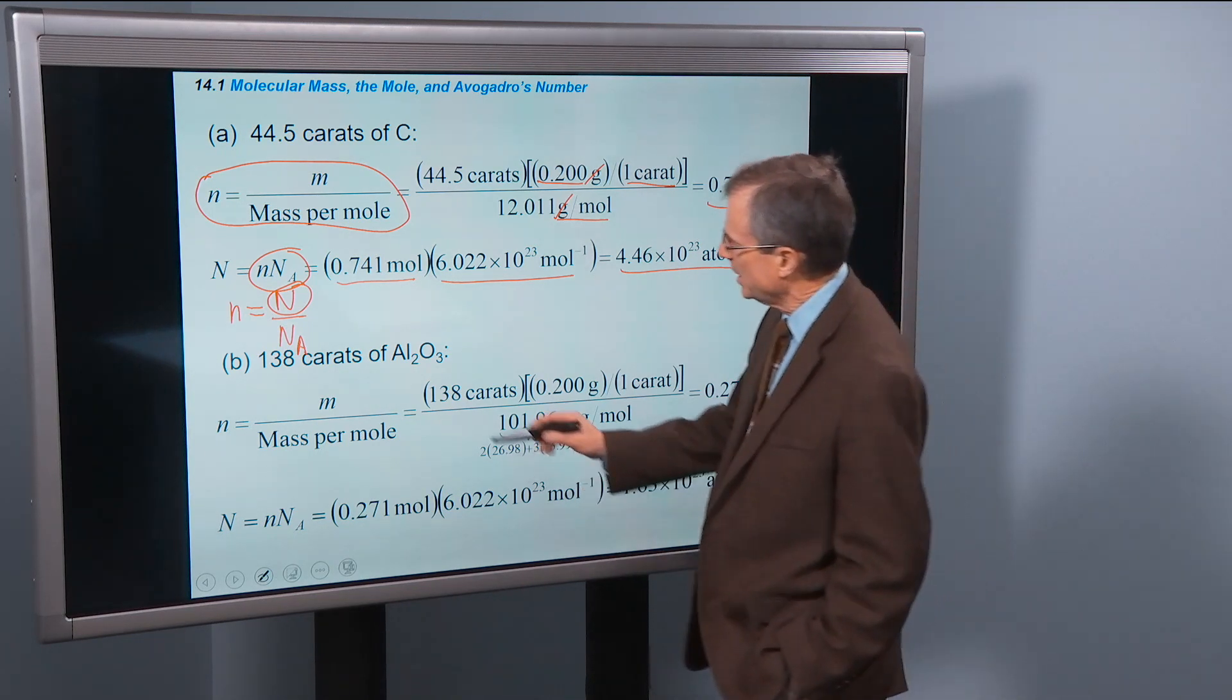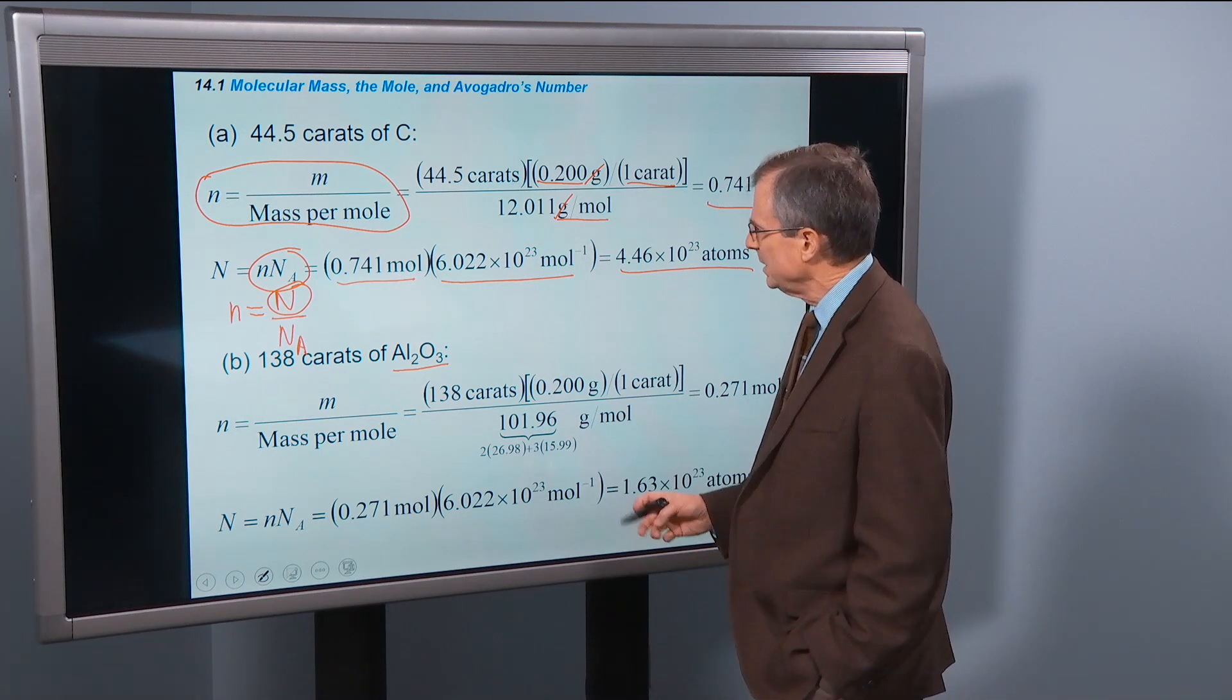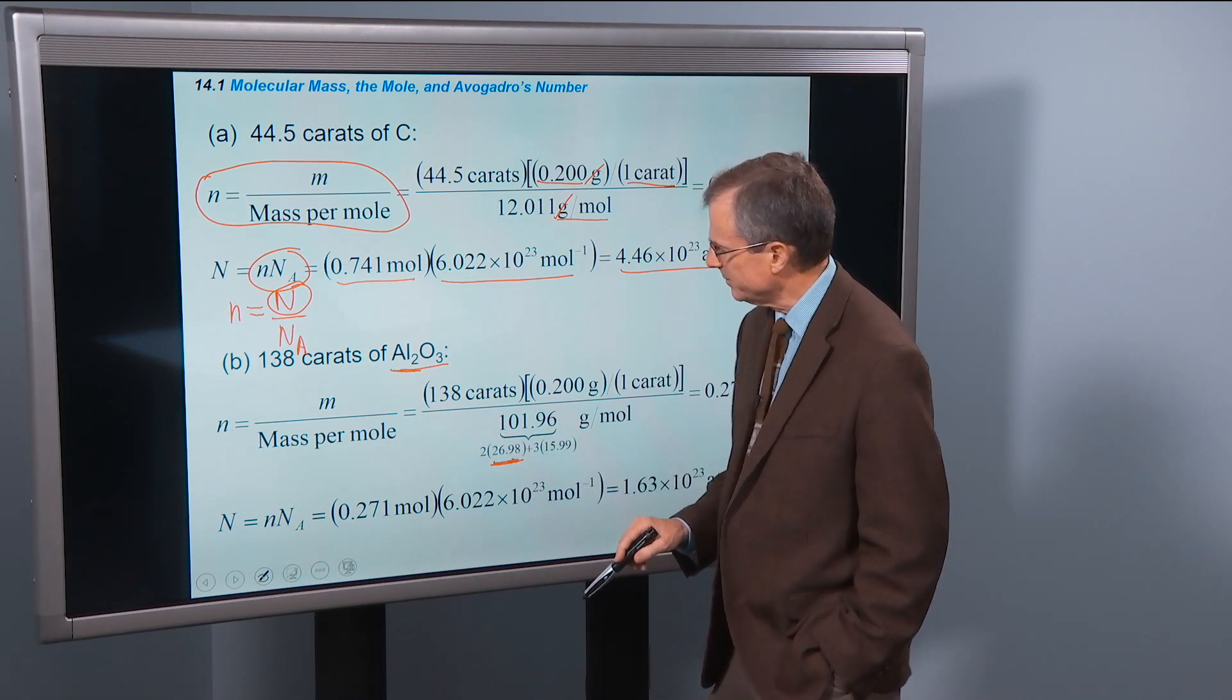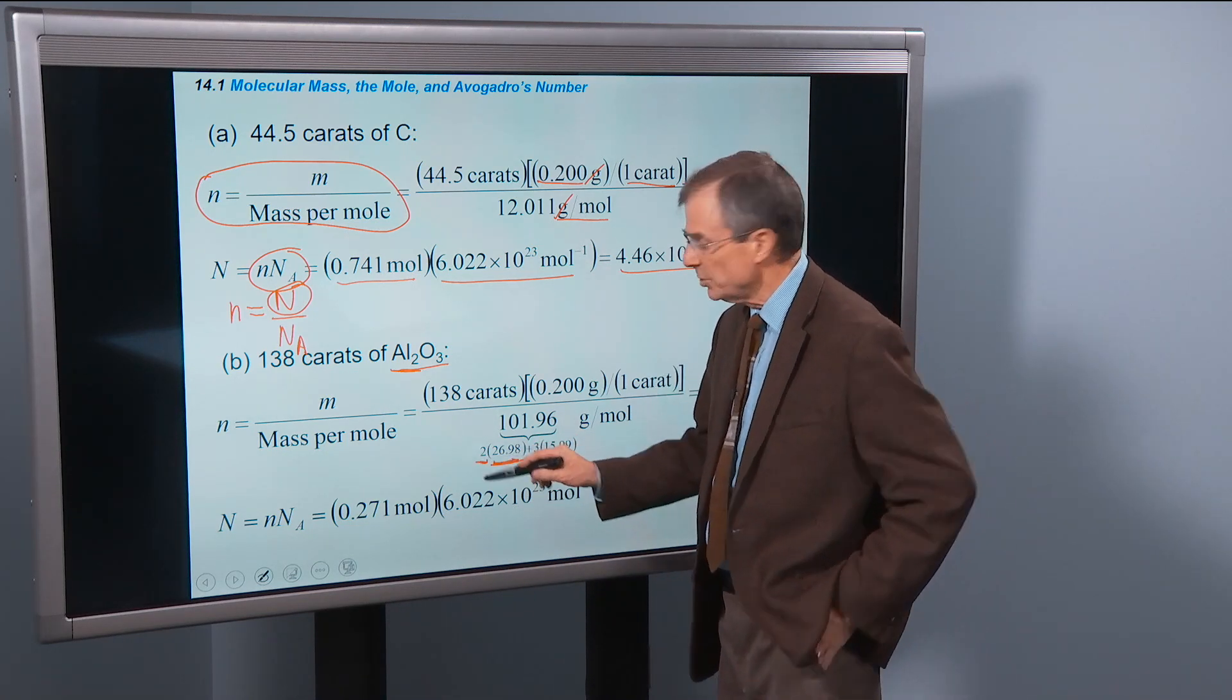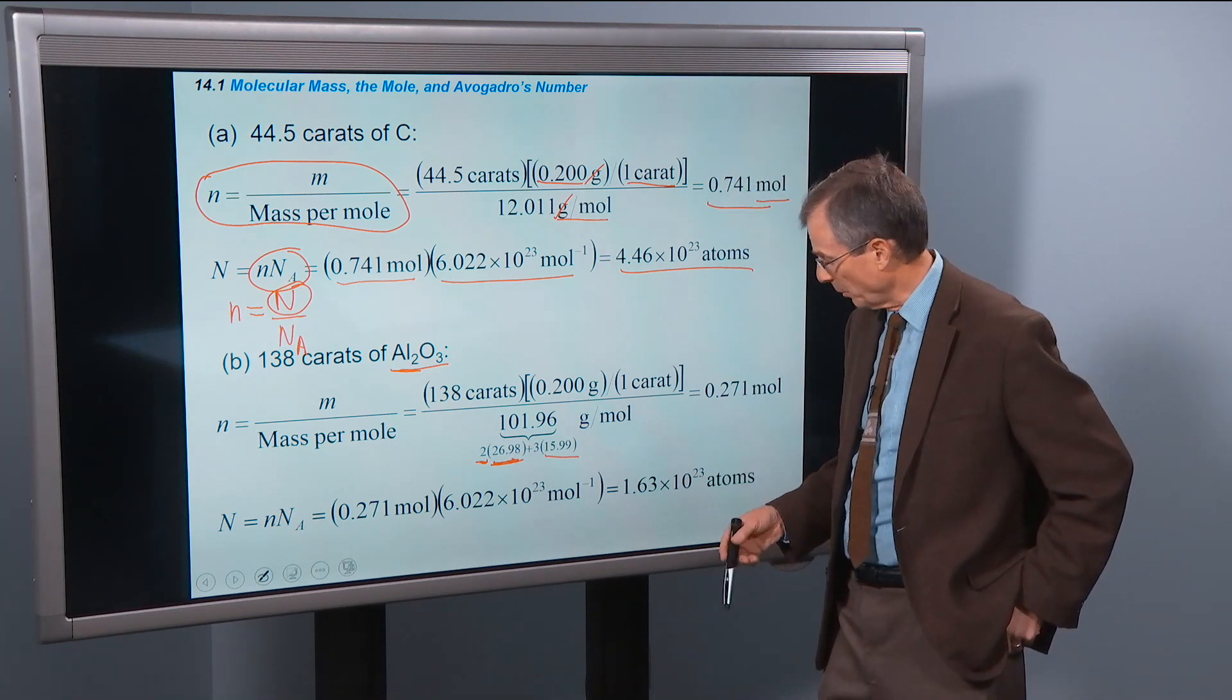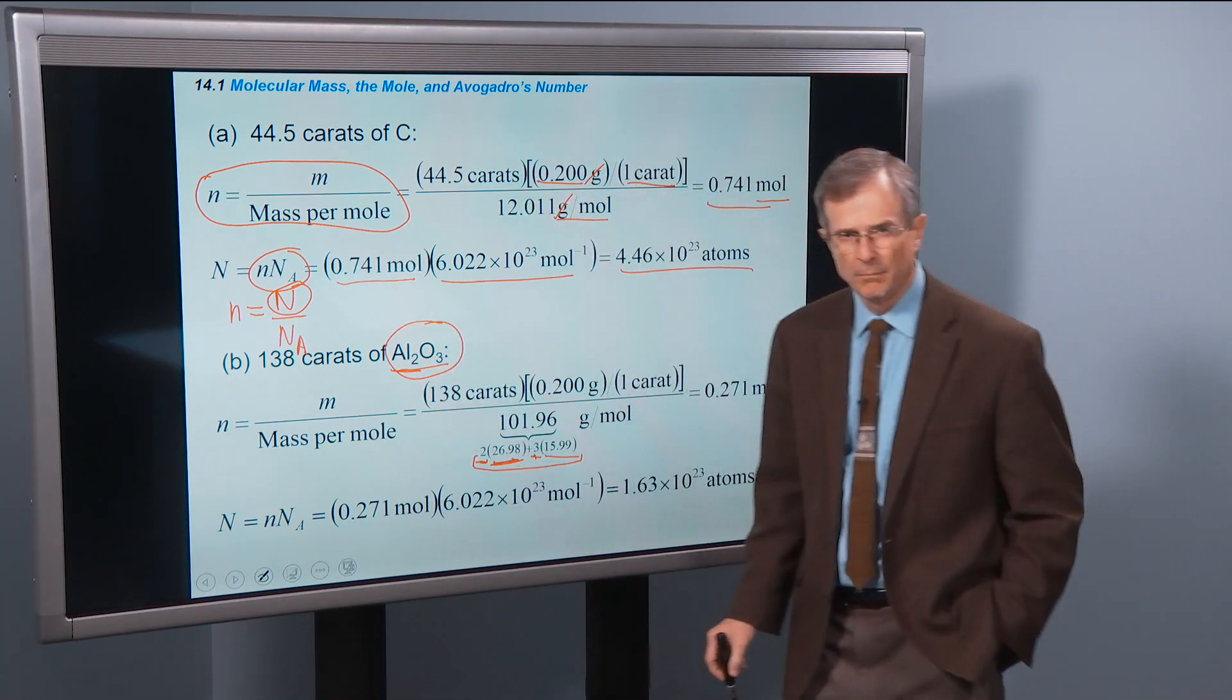For this ruby, 138 carats, we do the same thing to find the mass as we did with the Hope Diamond. But the mass per mole is a little more complicated. We've got two aluminum atoms and the atomic mass of each aluminum is 26.98, just look it up in a periodic table. Multiply that by two because you have two aluminum atoms. Then you've got three oxygen atoms, and their atomic mass is 15.99 grams per mole times three oxygens. This gives the entire mass of a single Al2O3 molecule, aluminum oxide.